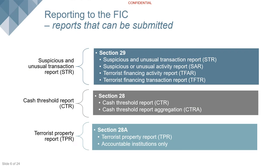With all Section 29 reports, you are not allowed to tip off the client — you cannot tell the person that you are reporting them to the FIC. Also note that Section 29 reports can be used as a defense should you be charged for money laundering. If a transaction is found to be linked to money laundering and you did not submit a Section 29 report, you might also be charged for facilitating that transaction. By filing a Section 29 report, you cannot be charged for money laundering.